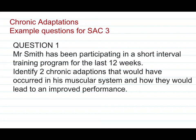Mr. Smith has been participating in a short interval training program for the last 12 weeks. Identify two chronic adaptations that would have occurred in his muscular system and how they would lead to an improved performance. So in our last video, remember we had the three points we had to look at: whether it's an anaerobic or aerobic training method, what chronic adaptations will occur, and how those adaptations will lead to improved performance. That's exactly what this question is set up with.